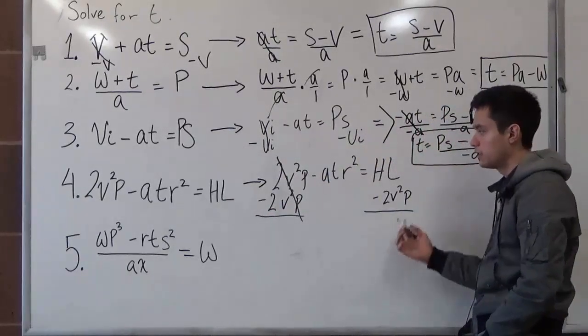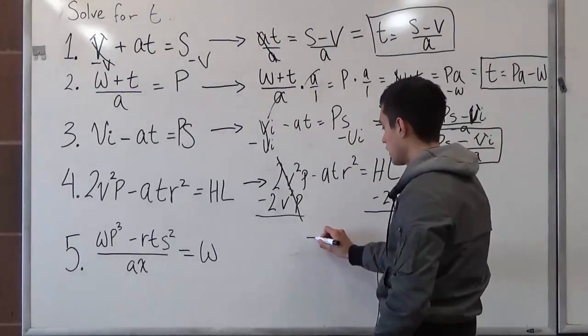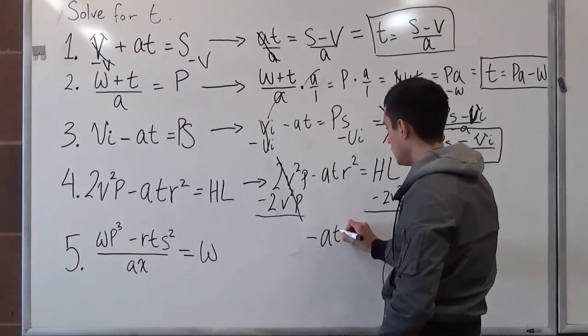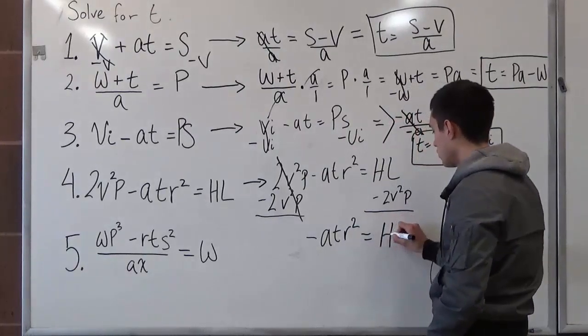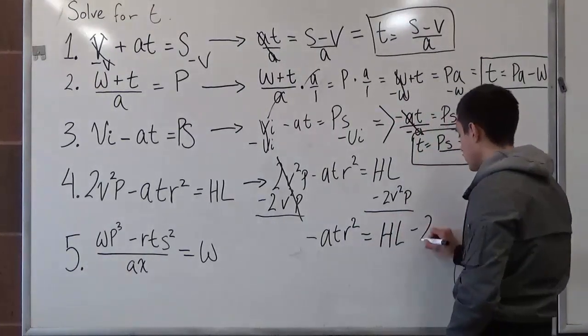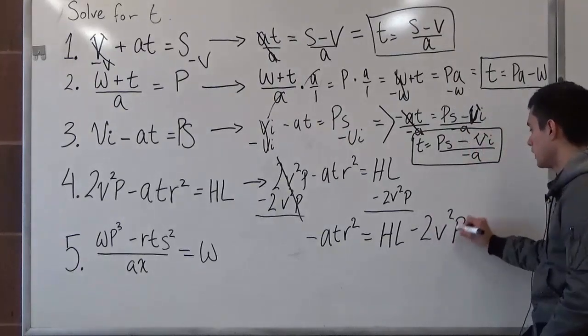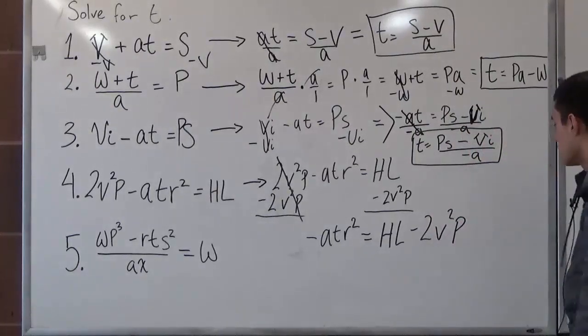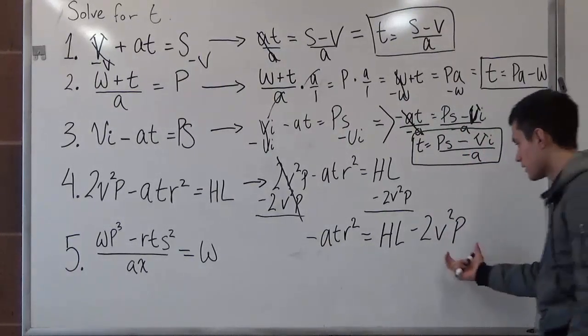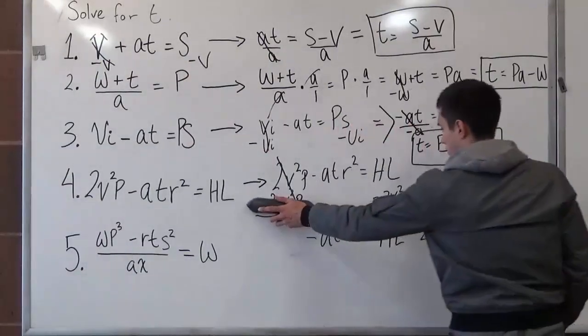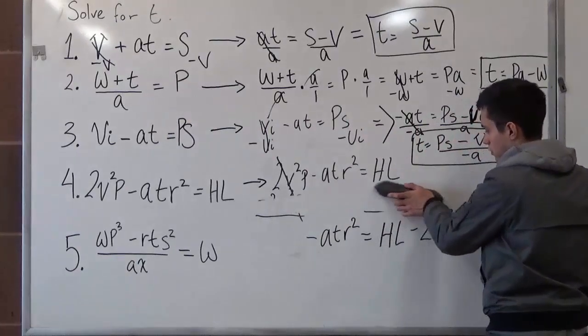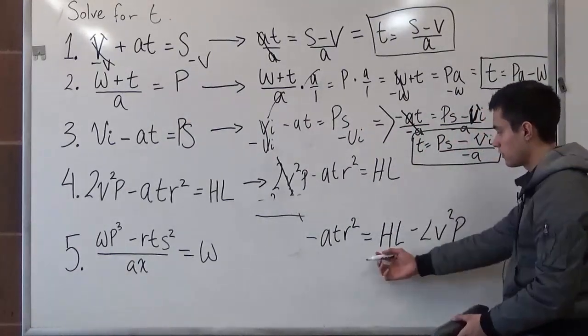So now you're starting to see how easy it's going to be. So we're left with negative atr squared is equal to hl minus 2v squared p. So this is now becoming a lot easier. I'm just going to erase this part after we have simplified it.